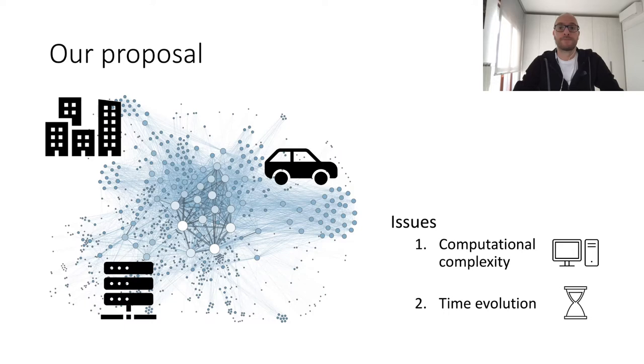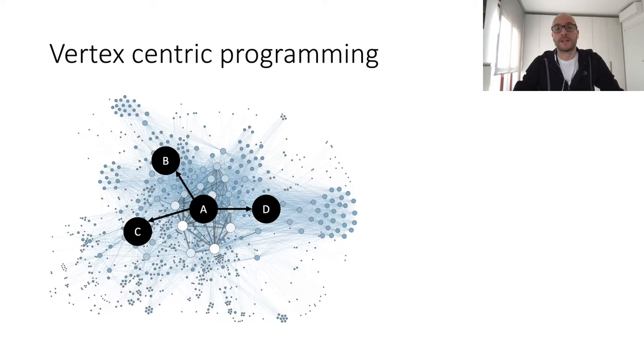So, let me start with vertex-centric programming. Introduced by Google Pregel almost a decade ago now, the vertex-centric programming model defines computations from the perspective of individual vertices. It is an iterative process where, at each iteration, vertices can exchange messages with their neighbors, and then they change their internal state in response to the messages they have received. The computation stops when a given terminating condition is met. So, in this abstraction, developers only need to specify the behavior of an individual vertex, and at runtime, the system automatically handles graph partitioning, communication, synchronization, and execution of the logic over all the vertices.